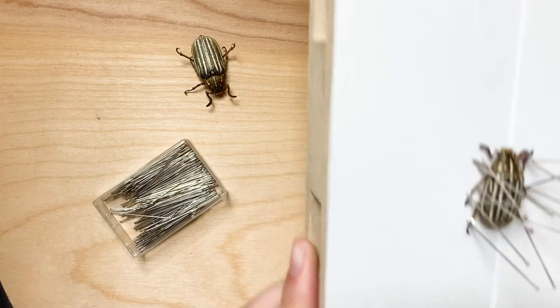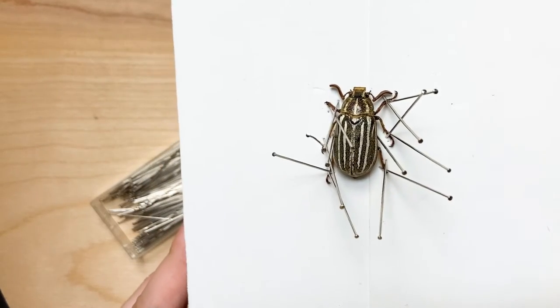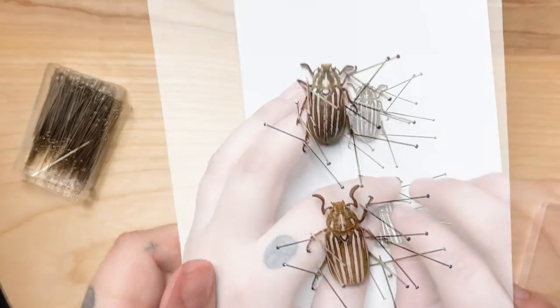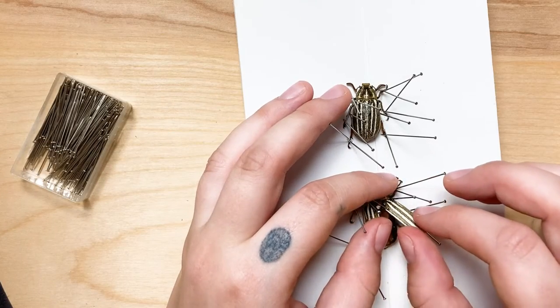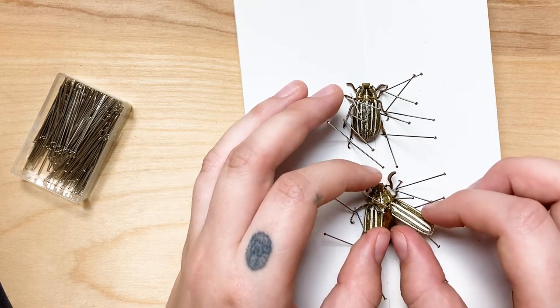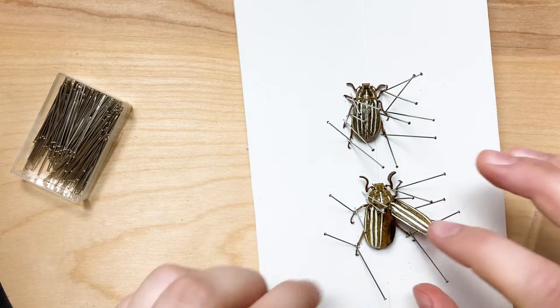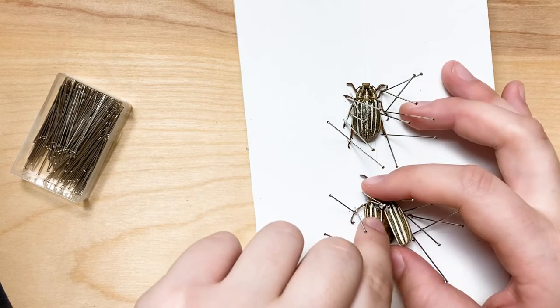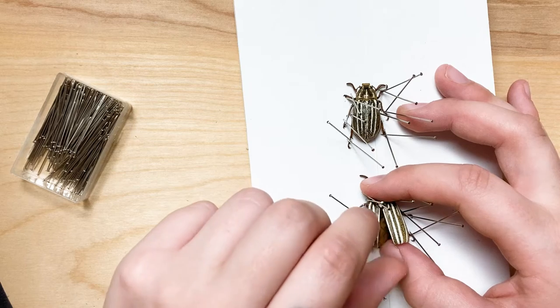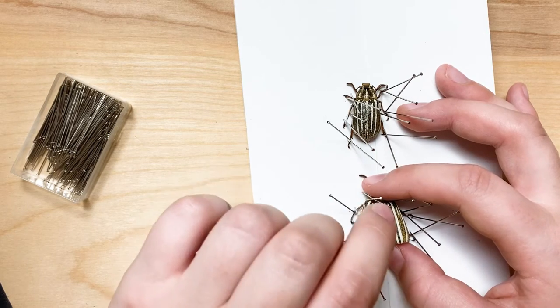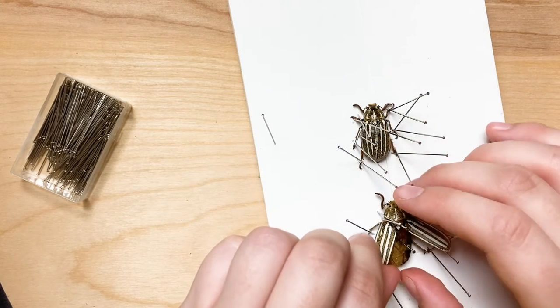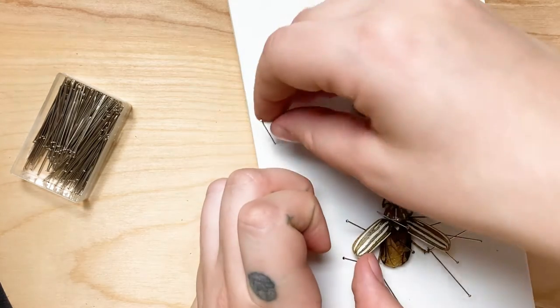I've decided to pose this guy with the wings extended, so I am just going to pop the elytra, which is the hard shell covering over the wings. It can be kind of scary to do this for the first time because you don't want to break anything, but once you've done that a couple times you can really sense how much force the insect can take.